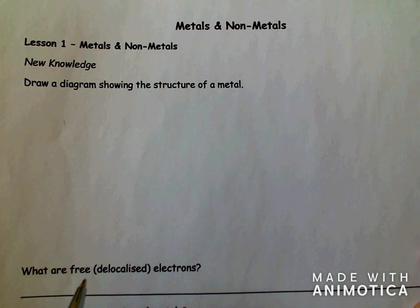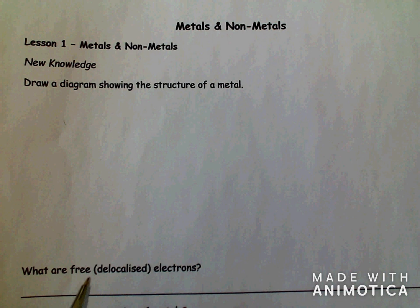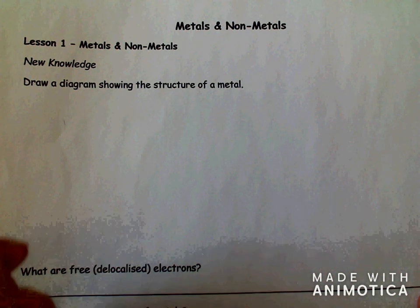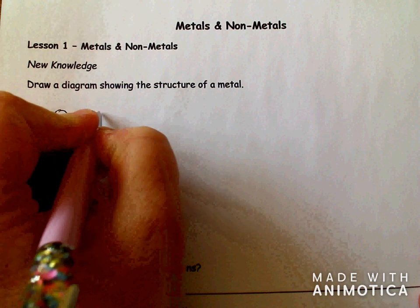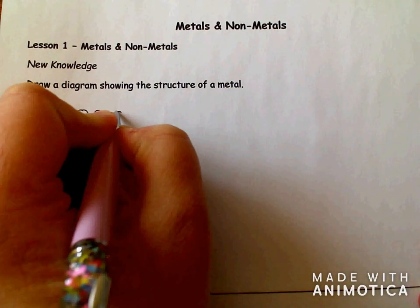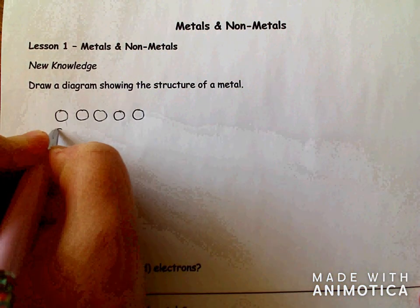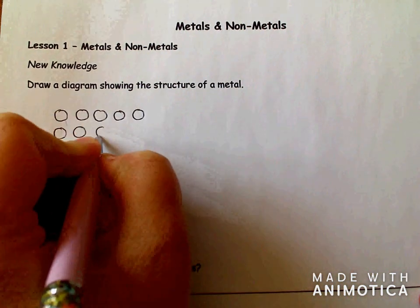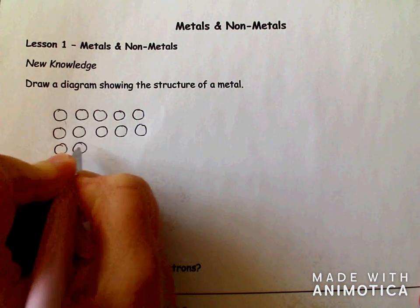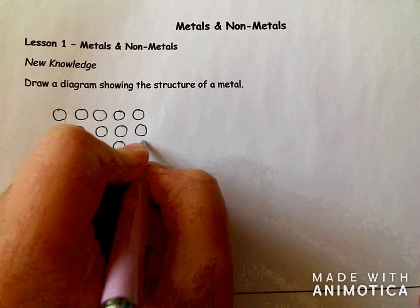Okay, so today we're going to be looking at the structure of a metal along with the properties of metals and non-metals. To start, we're going to recap the structure of metal. So if I was able to zoom in and see the particles inside, I would see rows of positive metal ions that form a layered structure like this.